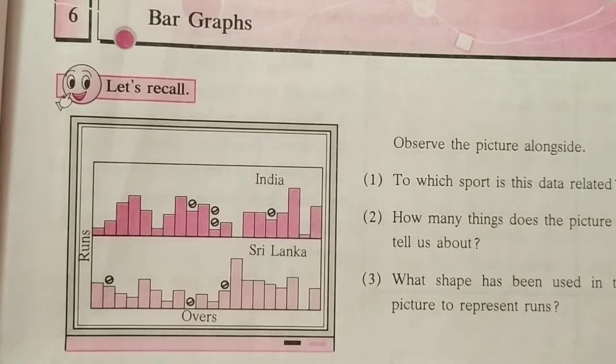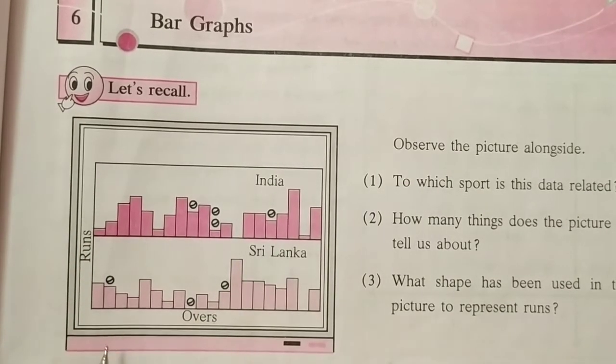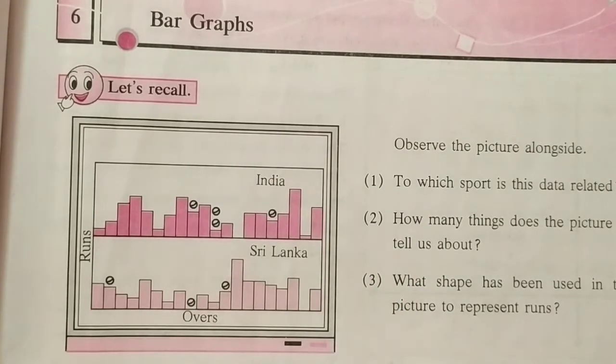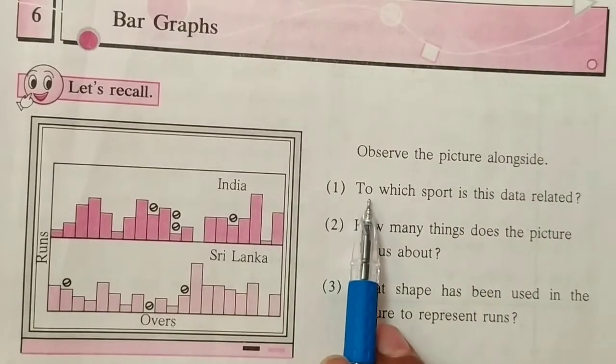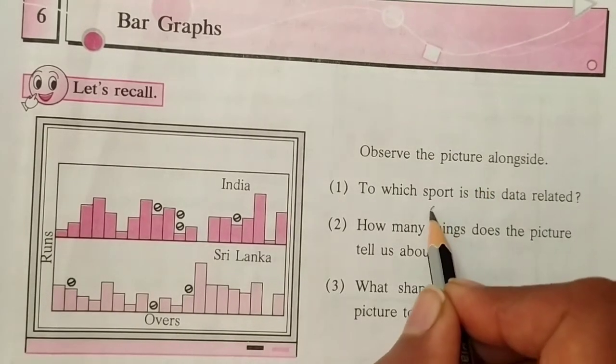Look in your book. The first figure is given here. We have to observe the given picture and answer three questions. The first question is: to which sport is this data related? When we observe the picture, we notice there are runs and overs, and from these two words we know the sport is cricket. So the answer to our first question is cricket.